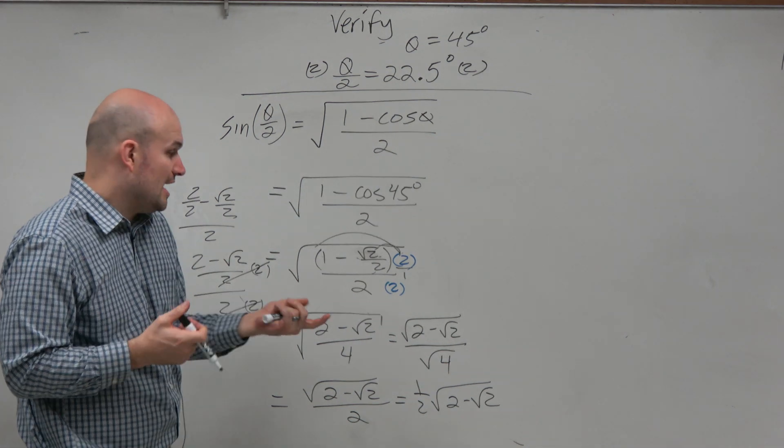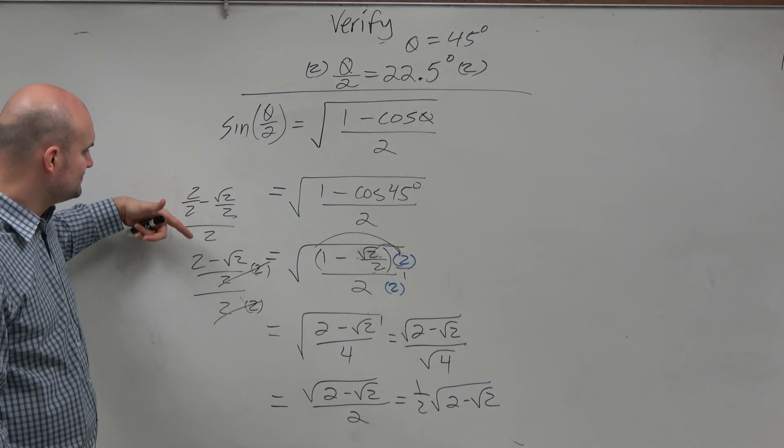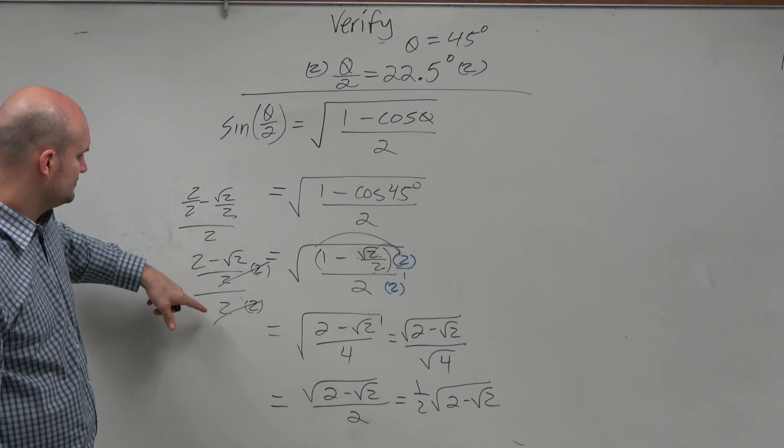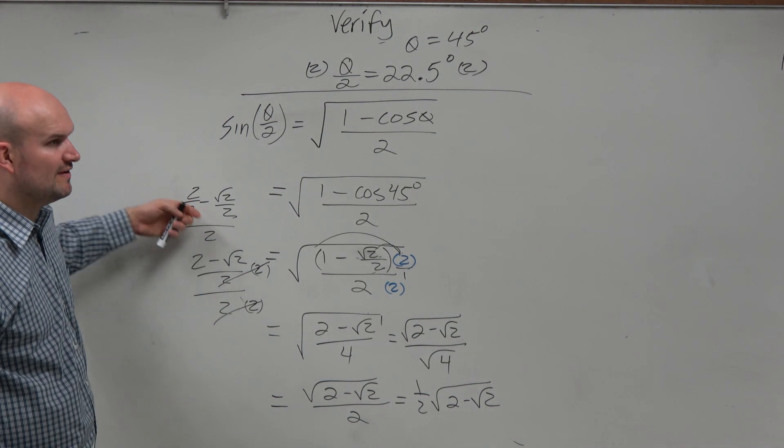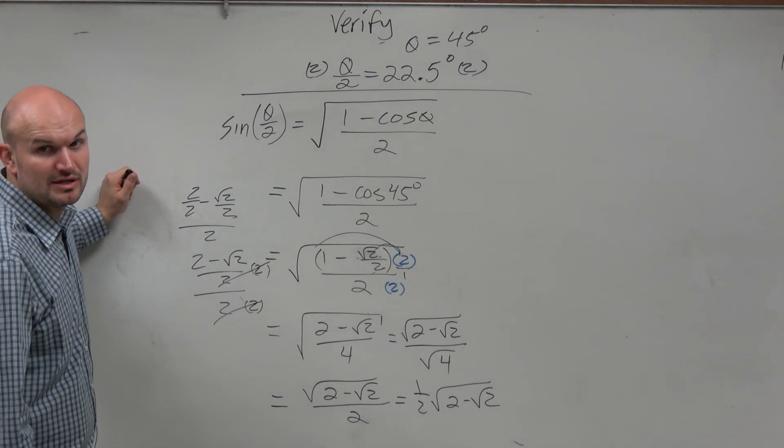No, I mean, the algebra gets confusing. Yeah, if you multiply by the reciprocal, you could still go ahead and multiply the reciprocal, but that won't simplify it. Yeah, that would give you still one fourth. That won't divide out. Any other questions?